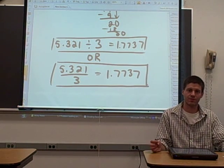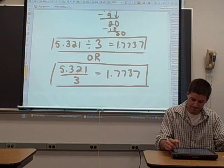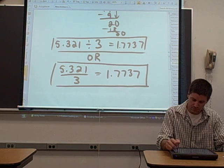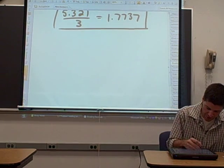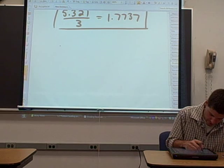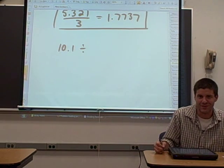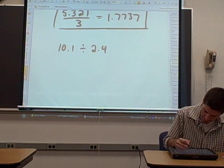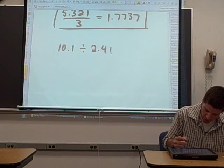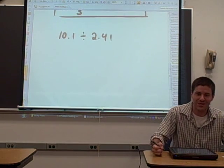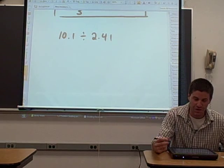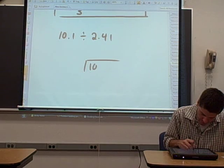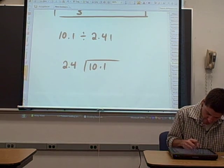So that's dividing a decimal by a whole number. Now what if you want to divide a decimal by a decimal? Say for example we wanted to take 10.1 divided by 2.41. We have two decimals and we want to divide them. Well, let's just write out the long division like we normally would. 10.1 divided by 2.41.